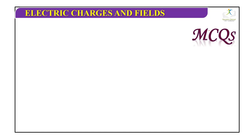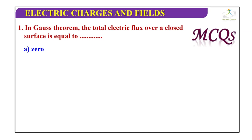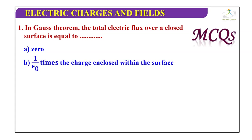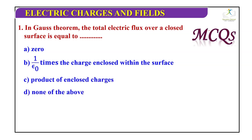Practice question: In Gauss theorem, the total electric flux over a closed surface is equal to — A: 0, B: 1 by epsilon naught times the charge enclosed within the surface, C: product of enclosed charges, D: none of these. The correct answer is B. Gauss theorem states that net electric flux phi over a closed surface equals 1 by epsilon naught times the charge enclosed within the surface.